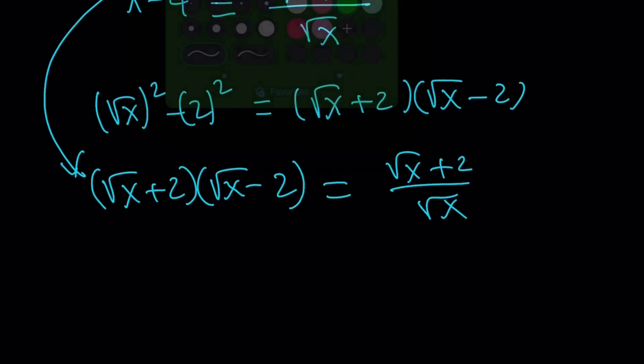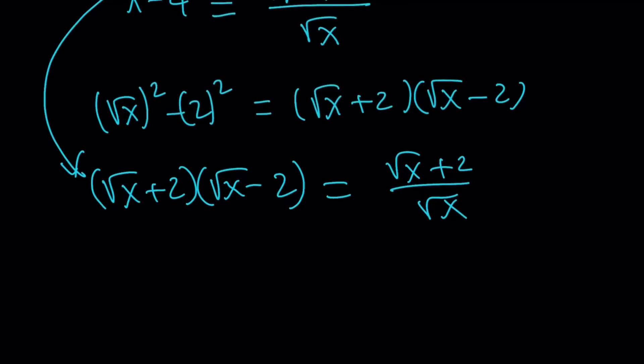Why? Because if square root of x plus 2 is equal to 0, that means square root of x is equal to negative 2. That means x is a complex number. Well, we're working with real numbers here, so that's not going to work. So, this expression cannot be 0, which means I can divide both sides by that and get rid of it.